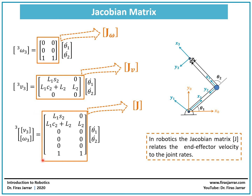The matrix that appears in this equation — formed by combining the angular and linear velocity sub-matrices — we call the Jacobian matrix. You can see from this equation that the Jacobian matrix functions as a method to relate the joint rates of a robotic arm to the velocity of the end effector, including both the linear and angular velocities of the end effector.